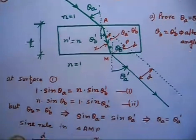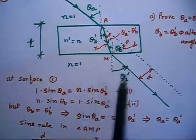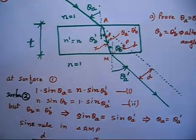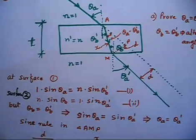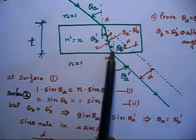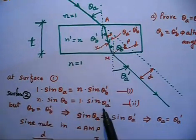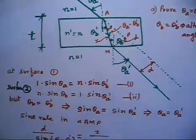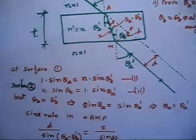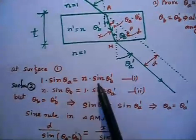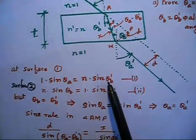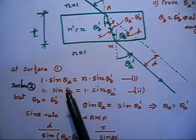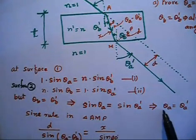Similarly, applying Snell's law on surface 2: n times sine theta_b equals 1 times sine theta_a'. Now using the third equation — theta_b equals theta_b' — these cancel out. So this means 1 times sine theta_a equals 1 times sine theta_a'. Simply, sine theta_a equals sine theta_a', which implies theta_a equals theta_a'.